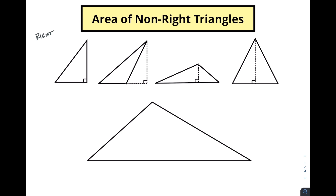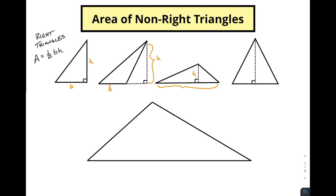When we have right triangles, the area is always one-half the base times the height. That's pretty straightforward because if we've got a right triangle, we always have the base and the height clearly defined. But if we've got a triangle that's not a right triangle, we still look at the base but then we have to create an imaginary height, or we cut it down and find a height that way.